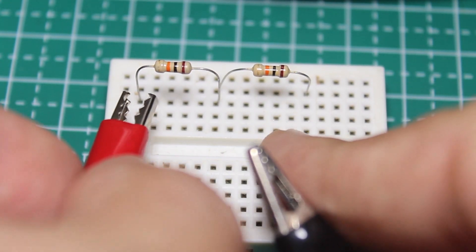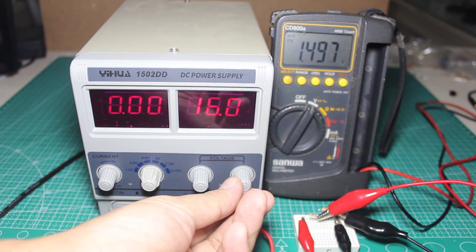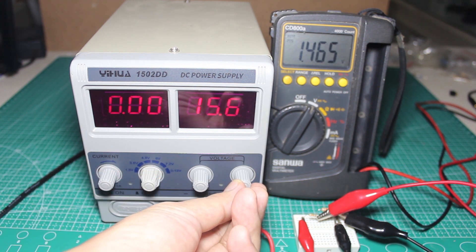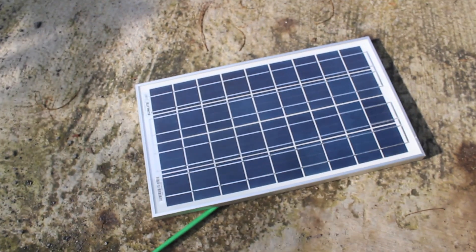In this video I'm going to talk about what is voltage divider, how it works, and use the knowledge to make a voltage sensor and use it to measure solar panel voltage output.